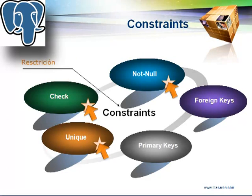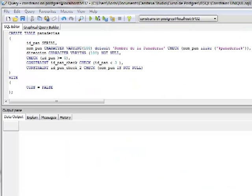Continuamos viendo la restricción Unique. La restricción Unique asegura que todos los valores de una columna sean distintos, es decir, que no se puedan repetir. Si existe una repetida, nos envía un error diciéndonos que se está especificando un campo repetido. Vamos a practicar mostrando un ejemplo en el código de cómo se construye el Constraint Unique.